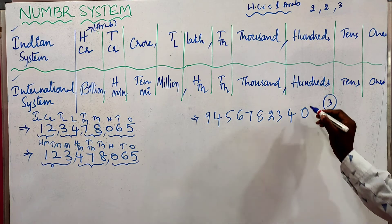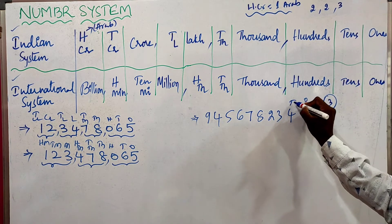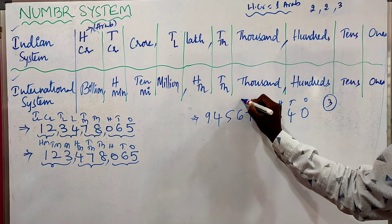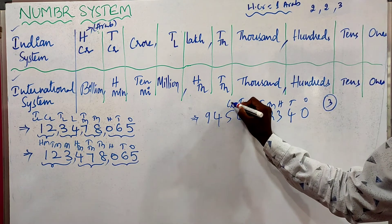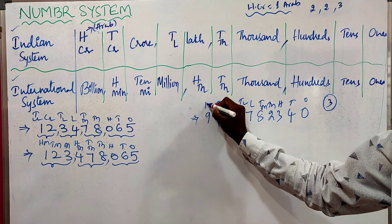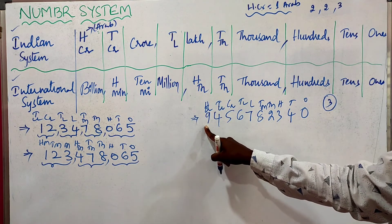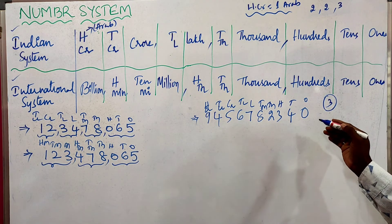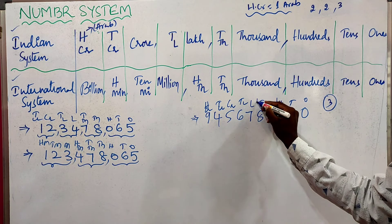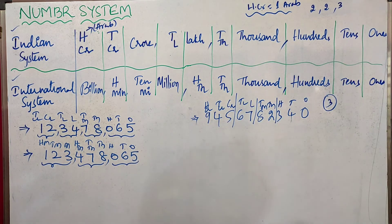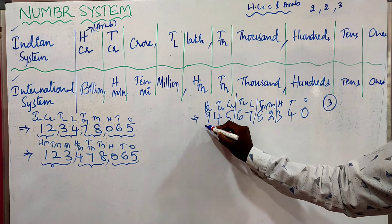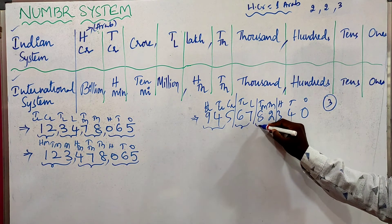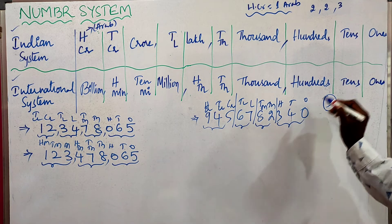Now we will consider the Indian system. The place values are: 1s, 10s, 100s, 1000s, 10 thousands, lakhs, 10 lakhs, crores, 10 crores, and 100 crores. Placing the commas from right to left — 3 digits, then 2 digits, then 2 digits — this number is read as 945 crores, 67 lakhs, 82,340.